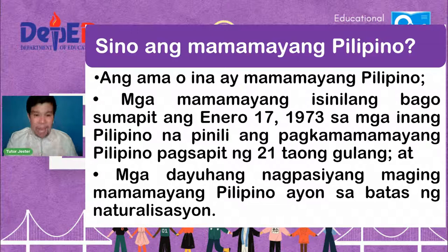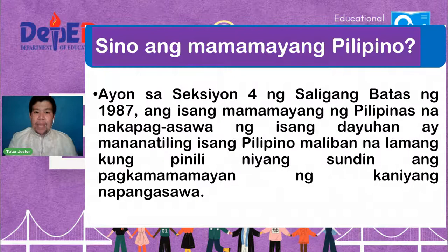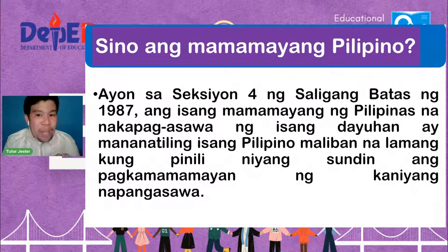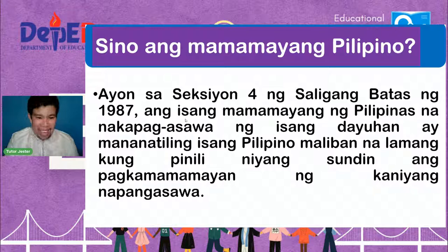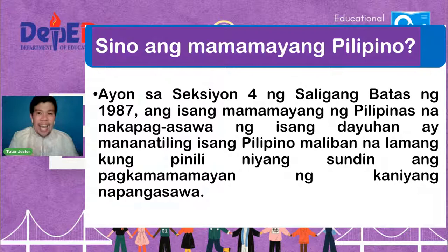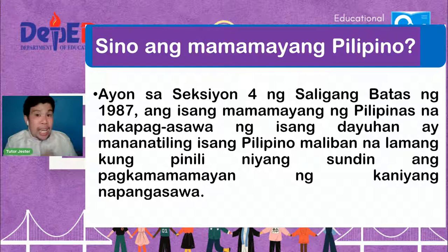Ayon sa Seksyon 4 ng Saligang Batas ng 1987, ang isang mamamayan ng Pilipinas na nakapag-asawa ng isang dayuhan ay mananatiling isang Pilipino maliban na lamang kung pinili niyang sundin ang pagkamamamayan ng kanyang napangasawa. May mga Amerikano nga pong magaling magbisaya at Tagalog — maaaring sila ay nakapangasawa ng Pilipina o lumaki dito sa ating bansa.